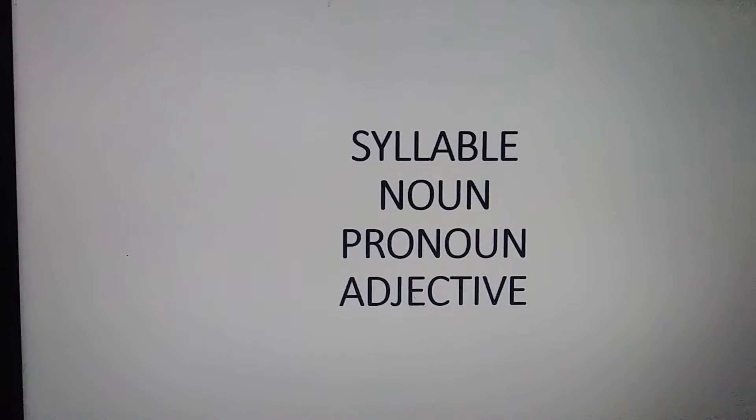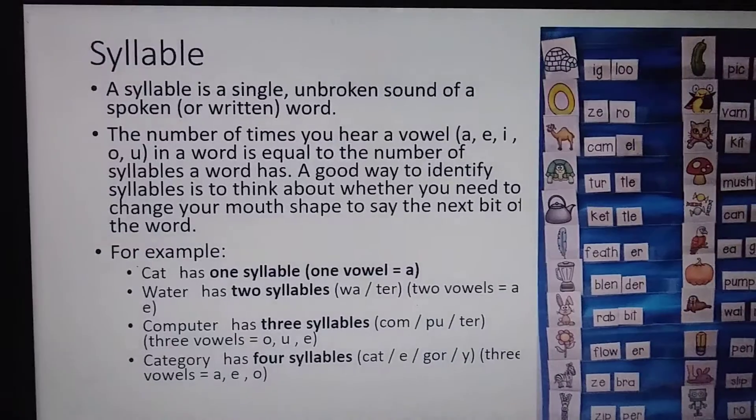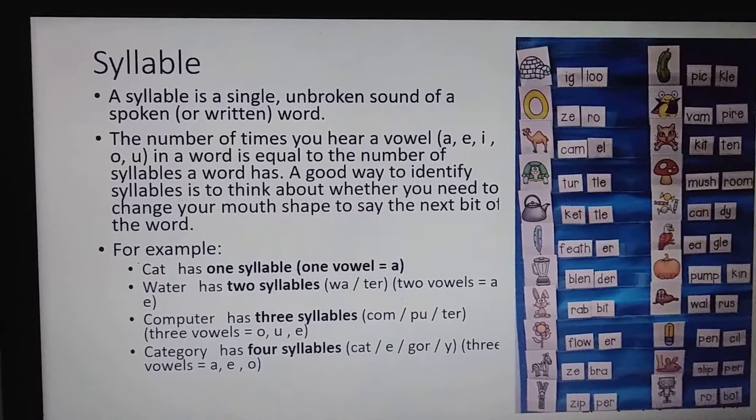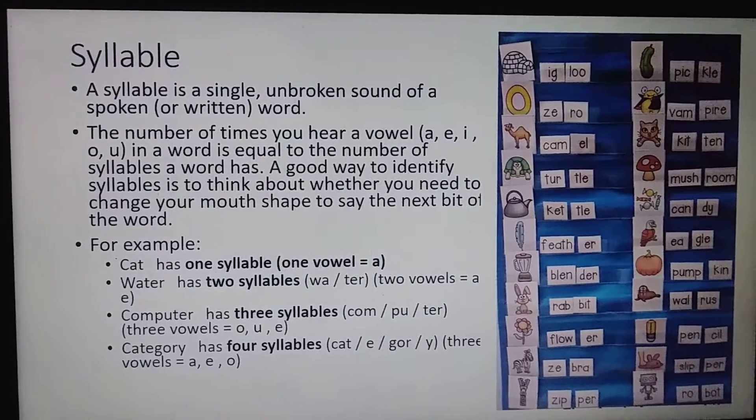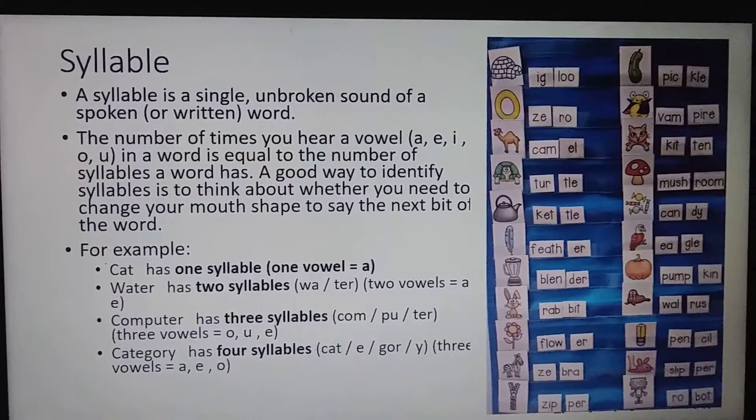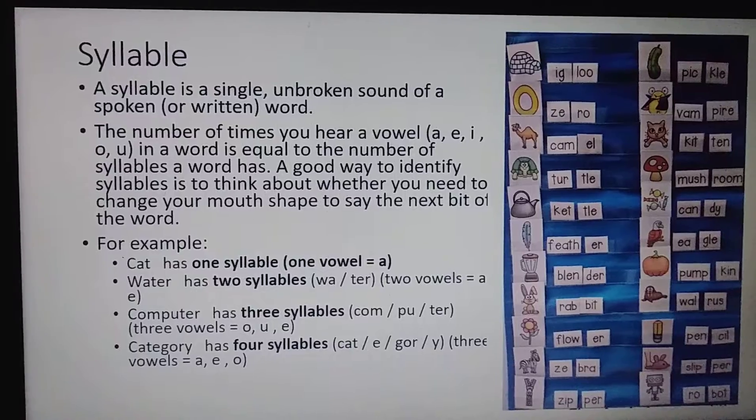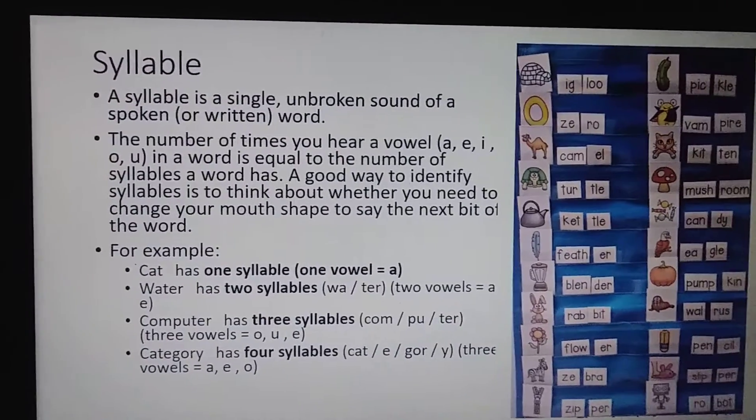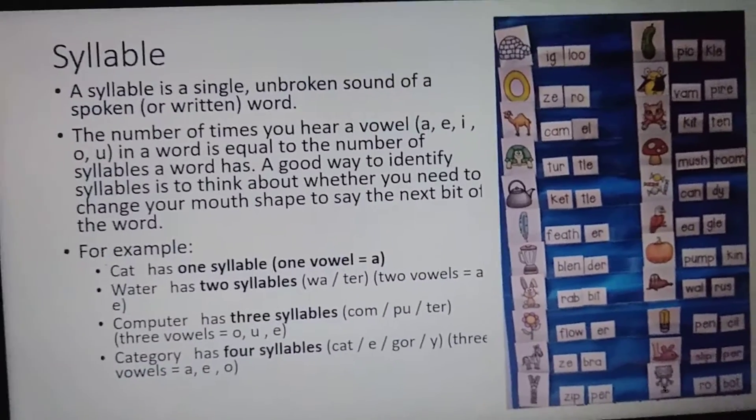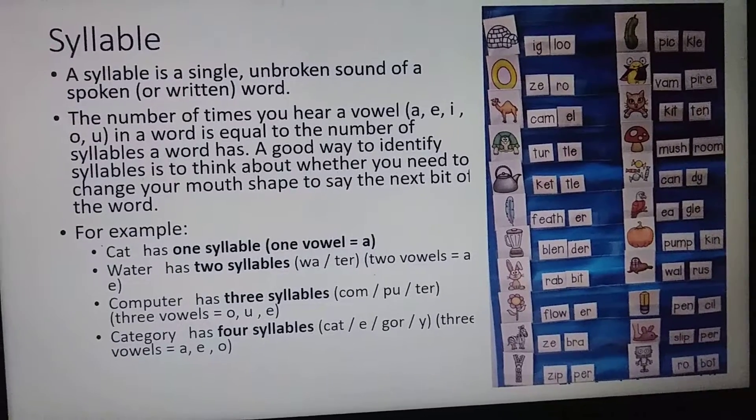Most of you must have known about all these. Today it is going to be a little review and also we are going to learn something new. We are going to start with the syllable. A syllable is a single unbroken sound of a spoken word. Syllable is so much related with vowels. The number of times you hear a vowel in a word is equal to the number of syllables a word has, and a good way to identify syllables is to think about whether you need to change your mouth shape to say the next bit of the word.